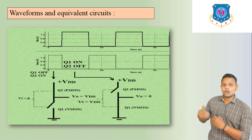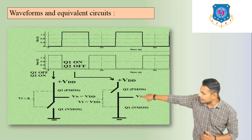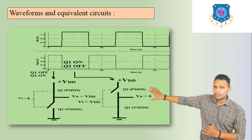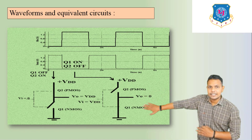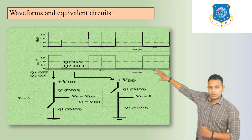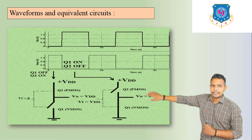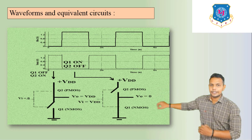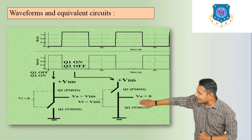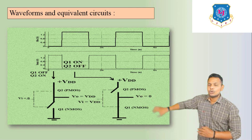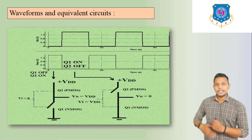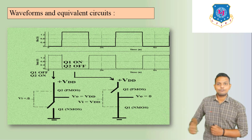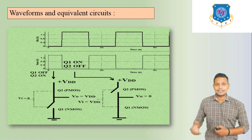Similarly, if Q1 is OFF and Q2 is ON, then Q2 is closed-circuited and Q1 is open-circuited. Current flows from VDD to the output side, so the output voltage equals VDD. If Vi = 0, then output = VDD. As seen in the waveform and equivalent circuit, the CMOS inverter behaves as an inverter: if you enter 0 you get 1, and if you enter 1 you get 0.